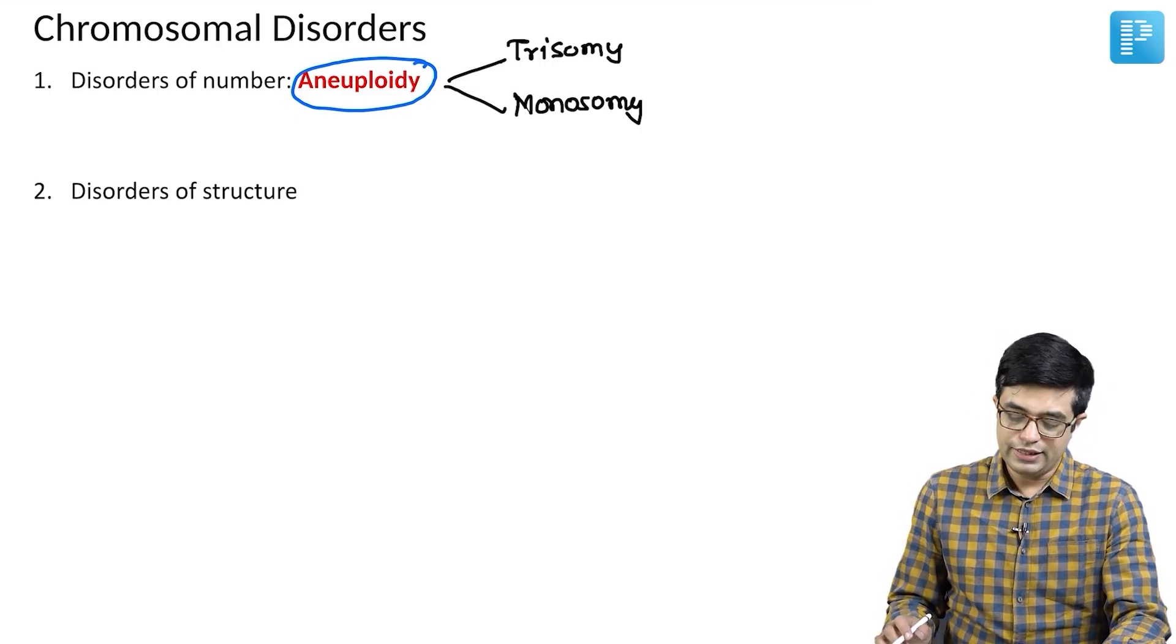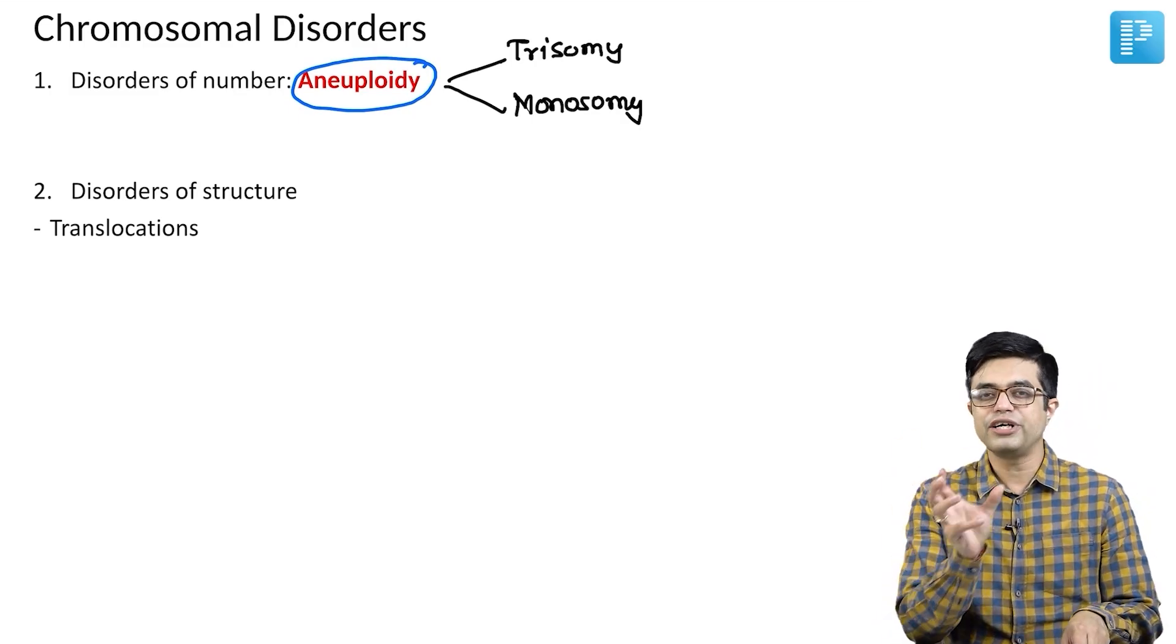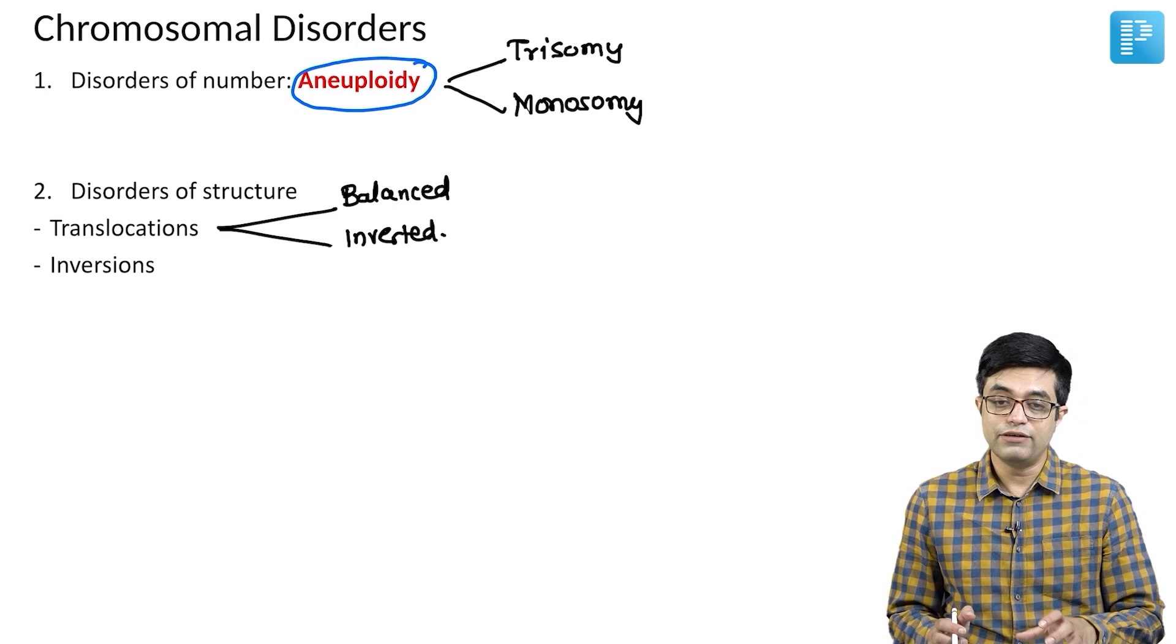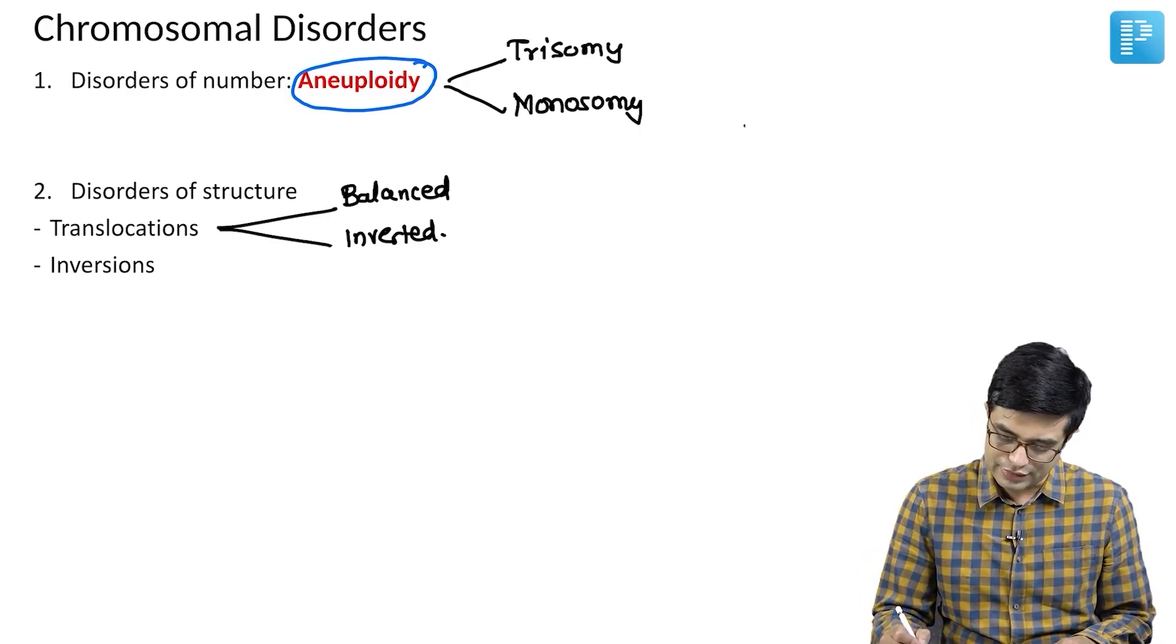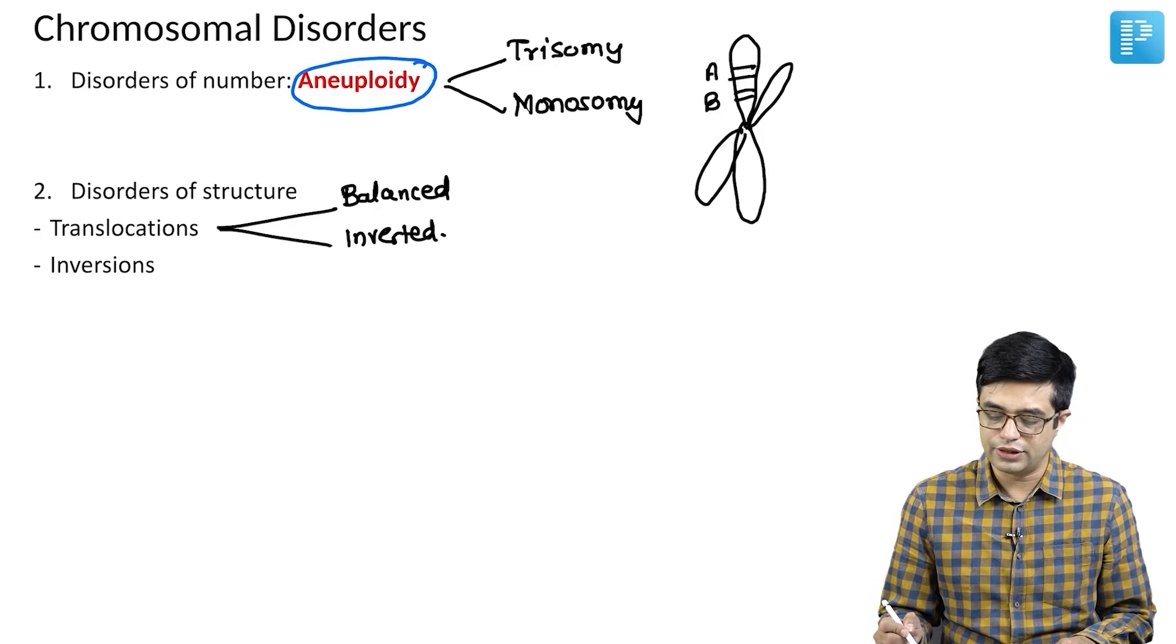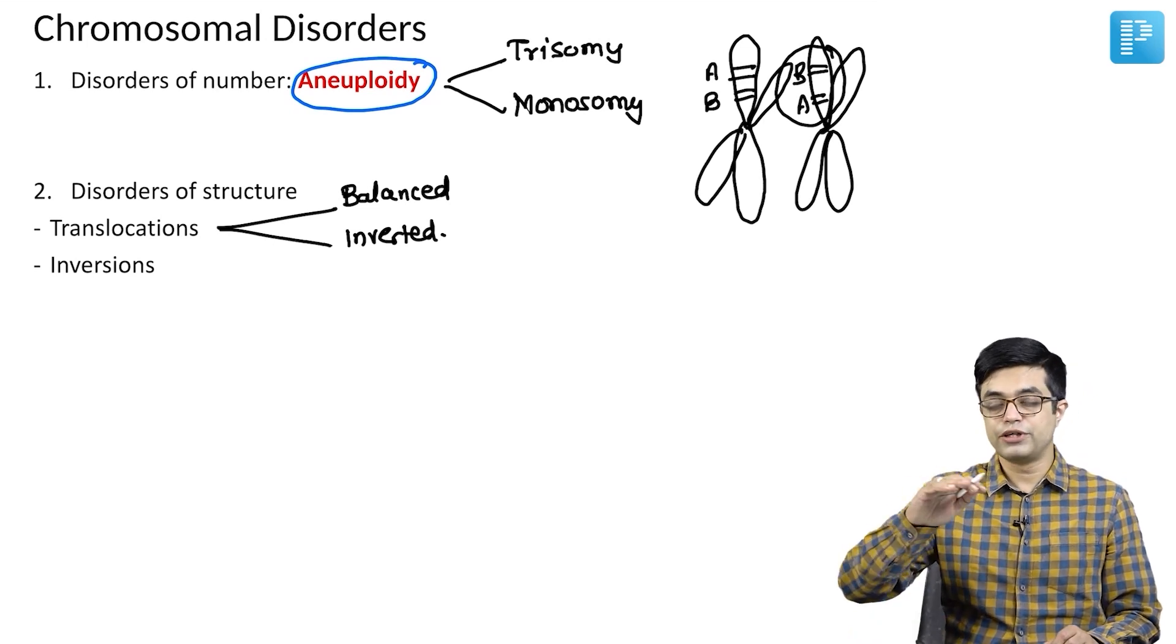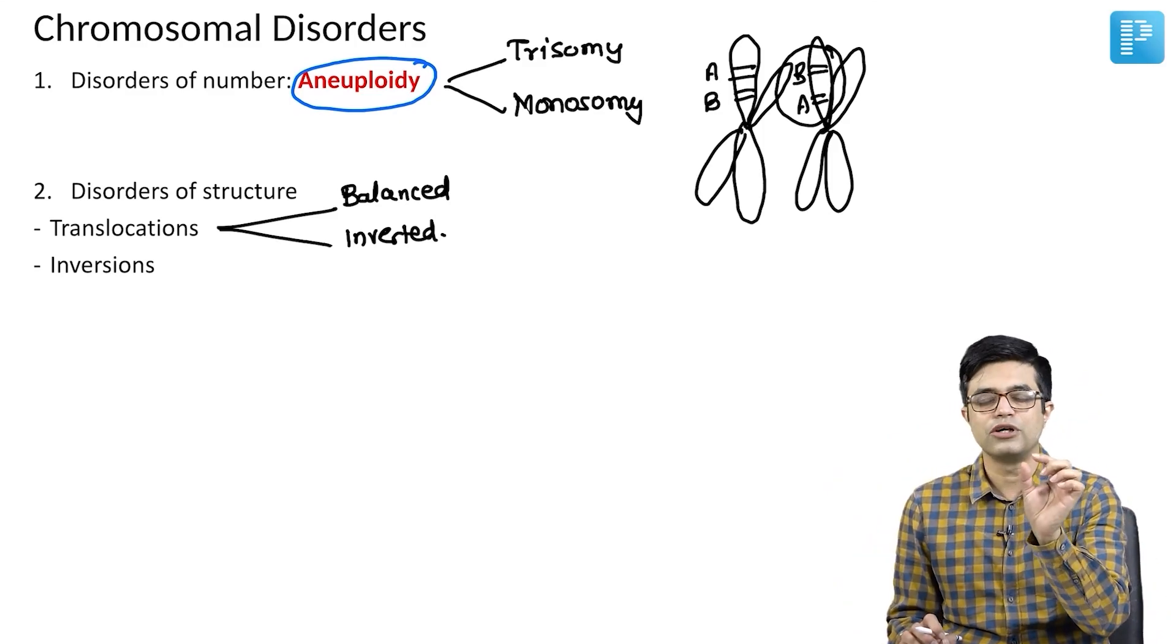Then you have disorders of the structure. In disorders of the structure, the overall number will be same, but individual structure can be changed. The first variety is translocations. Translocation means shifting of the genetic material. There can be balanced translocations and there can be inverted translocations. Then you have inversions. Inverted translocation is a different thing. Inversion is a different thing. Inversion basically means the gene sequence gets changed. Suppose you have a chromosome, gene A was here, gene B was there. Something happened and now B chromosome is here and A is here. This particular segment has undergone inversion. Inversion means shifting or 180 degree turning of the particular genetic segment. It does not involve the entire chromosome. A particular segment of the chromosome is involved.